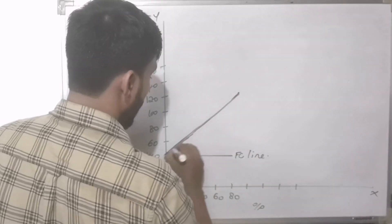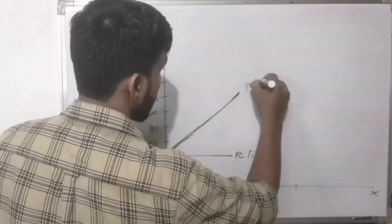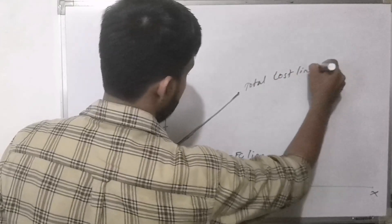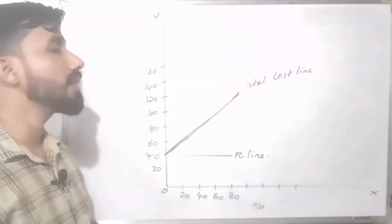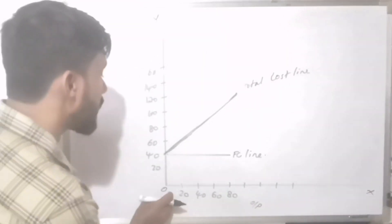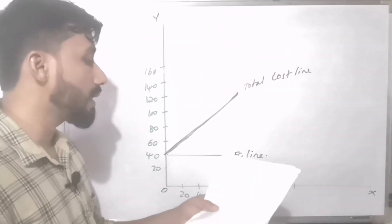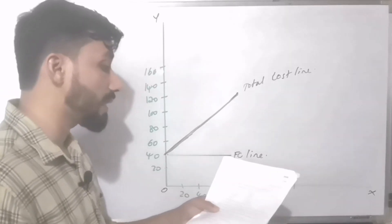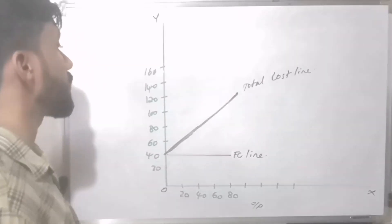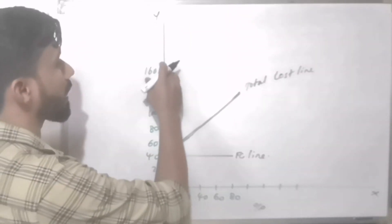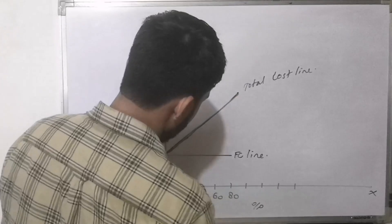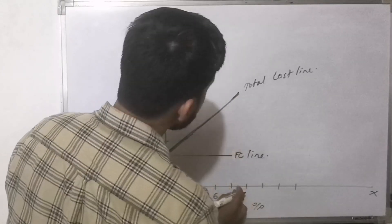The total cost line is drawn upward from Rs. 4,00,000. We also plot the sales line starting from the origin. Total sales at 80,000 units equals Rs. 16,00,000, represented as a straight line from zero to the maximum output.